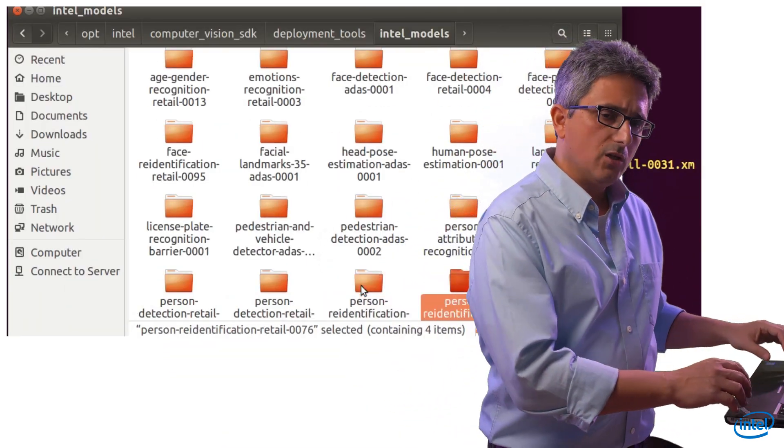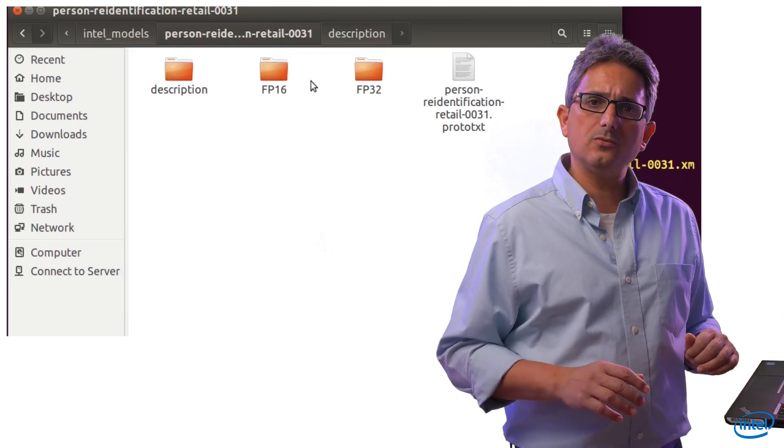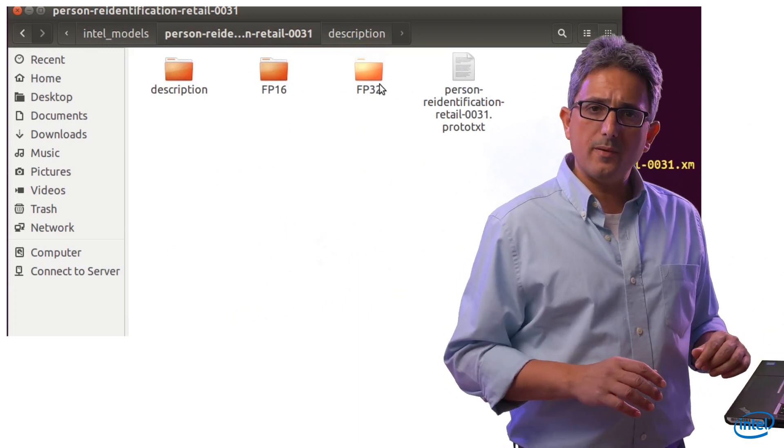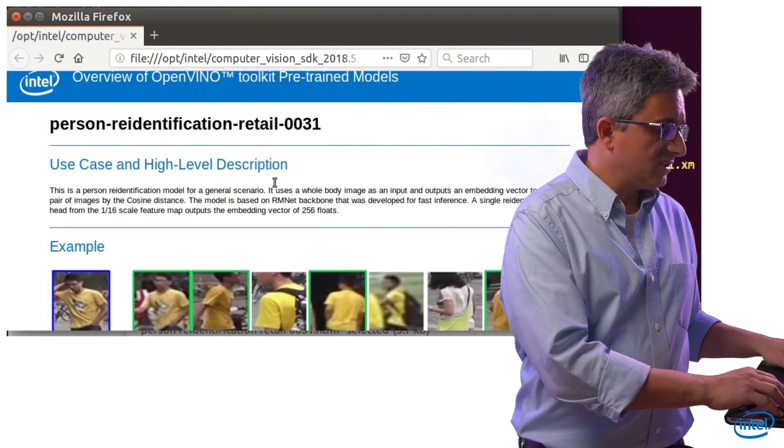If you'd like to get more information on the models we're using, just navigate to the right directory. You can see here the two IR files, FP32 and FP16. Open the description folder, the HTML file, to see the full details.